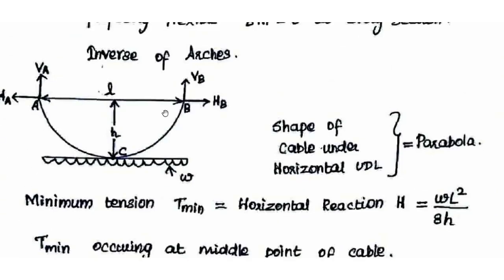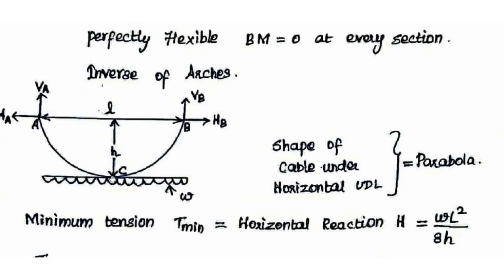Now let's look at a cable. There is a horizontal component, horizontal reaction, and vertical reaction at points A and B. The dip of the cable is at point C, the midpoint. D is the dip of the cable, L is the horizontal span, and W is the UDL acting horizontally.